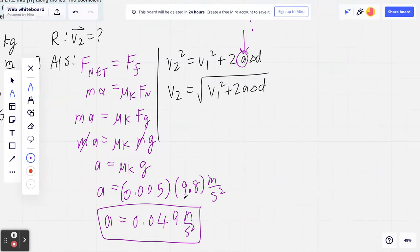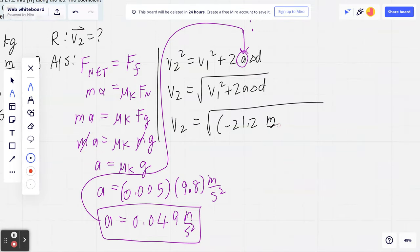Now we have acceleration, which means we can plug it in to the next line. V2 equals the square root of, and if you go back, negative 21.2 meters per second squared plus two times negative 0.049 meters per second squared times 58.5 meters.